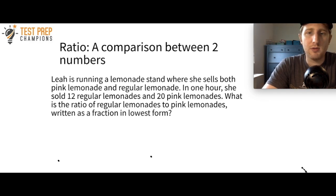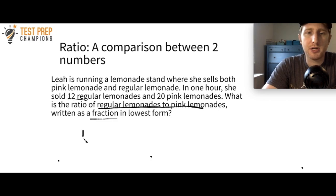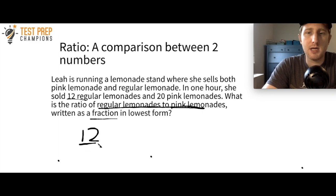The most important thing with ratio questions is to get the ordering right. We're asked for the ratio of regular lemonades to pink lemonades, written as a fraction. So regular lemonades goes on top — that number is 12 — and since it says regular to pink, the number on the bottom is going to be 20 for the pink lemonades.